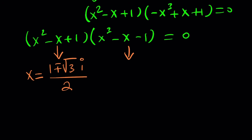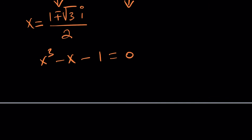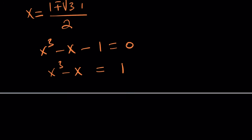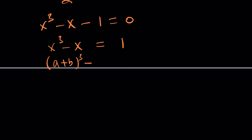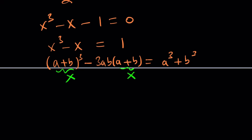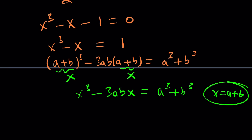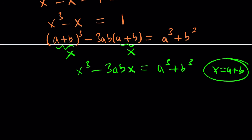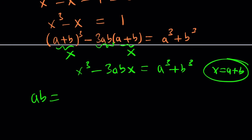First, put the constant on the right-hand side. Then remember the identity: a plus b cubed, if you subtract 3ab times a plus b, that leaves you with a cubed plus b cubed. So if you set a plus b equal to x, you get the equation x cubed minus 3ab·x equals a cubed plus b cubed, and x equals a plus b is a solution. Comparing coefficients: 3ab must equal one, so ab equals one-third; and a cubed plus b cubed must equal one.